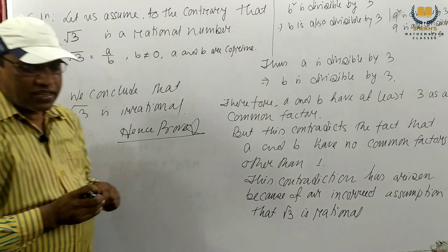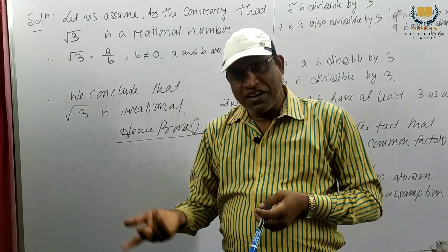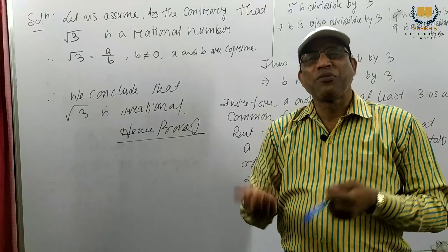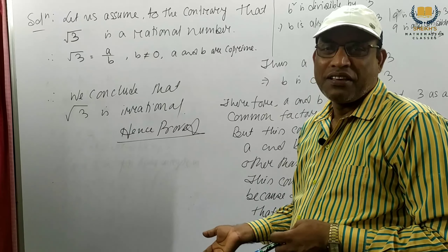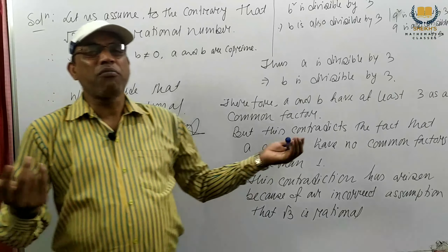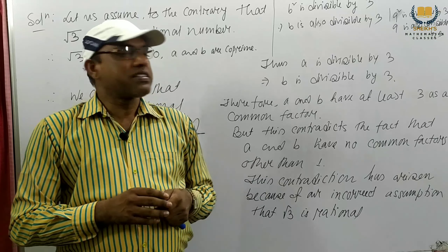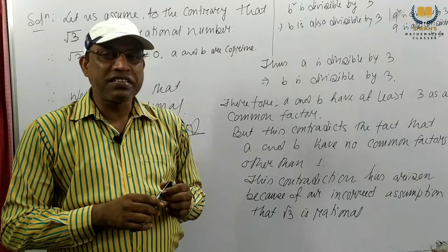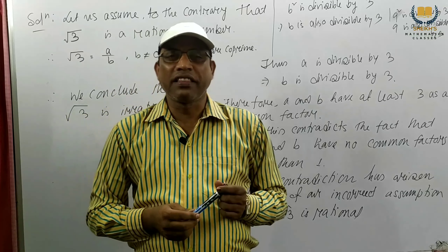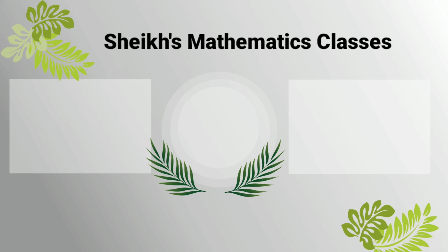So this is the proof. This is the logic — it may come in your exam. It could be root 2, root 3, root 5, root 7 — the procedure is the same. First we consider A by B and use the same method to solve. If any problem is given, we can solve it in this way. Dear students, I think the solution is easy. If you found it easy, please subscribe to my channel, like this video, and click the bell icon. Thank you.